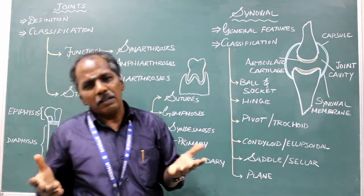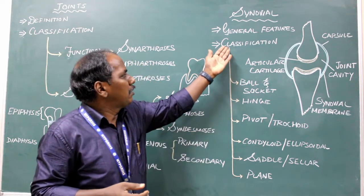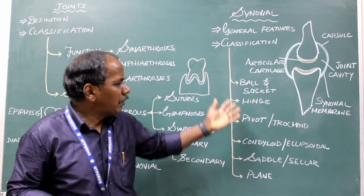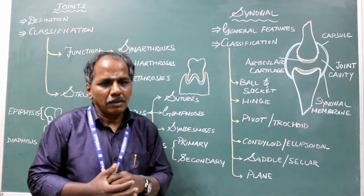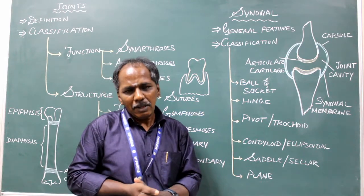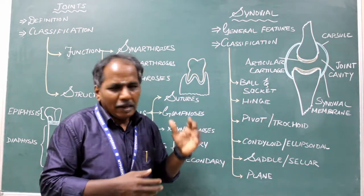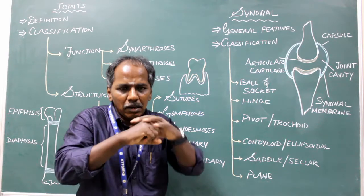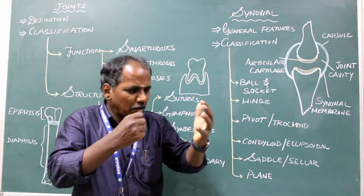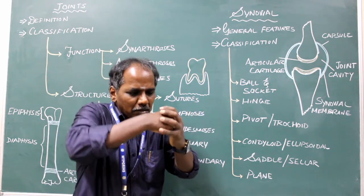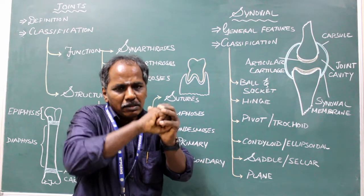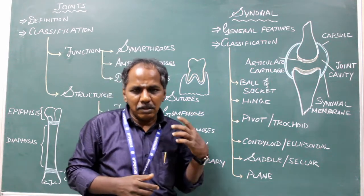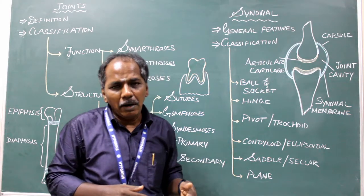Classification of synovial joints. Synovial joints may be classified into many types. Number one: ball and socket variety. In this type, one of the articular ends is round or spherical and fits into a socket so that articulation takes place. Examples: shoulder joint and hip joint.